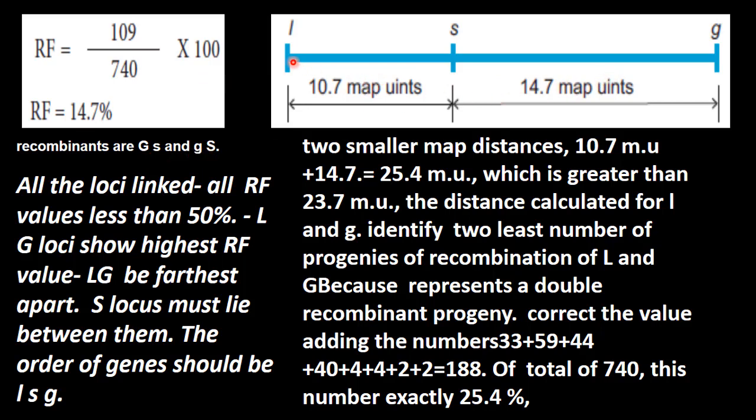These two units together, two smaller map distances, 10.7 and 14.7 are 25.4, which is greater than the 23.7, that is L and G. So there is some adjustment is required. Why is the adjustment required?